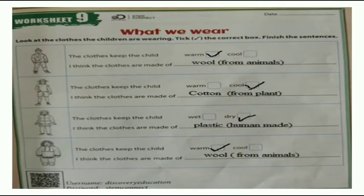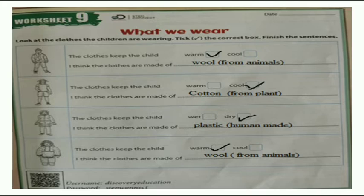We have completed our chapter. This is worksheet number 9 — What We Wear. The clothes keep the child warm: the clothes are made of wool, which comes from animals. The clothes keep the child cool: the clothes are made of cotton, which comes from plants. The clothes keep the child dry: the clothes are made of plastic, which is human-made. The clothes keep the child warm: the clothes are made of wool, which comes from animals.